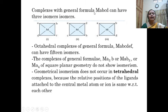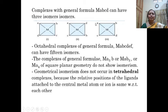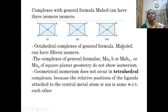Octahedral complexes with the general formula MABCD can have three isomers. Octahedral complexes with the general formula MABCDF will have 15 isomers.